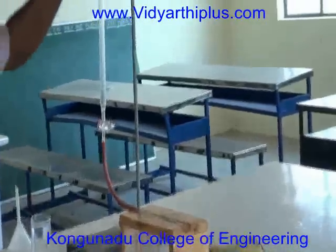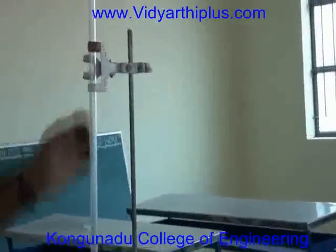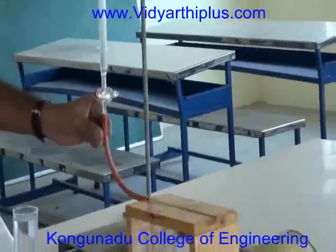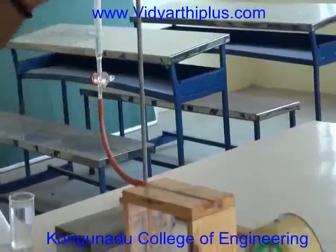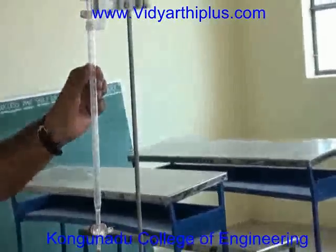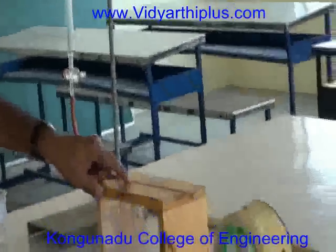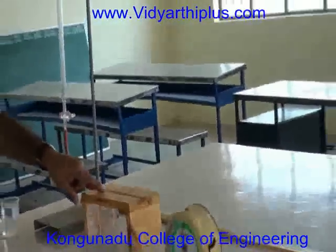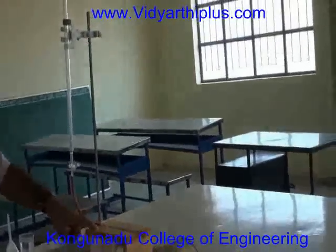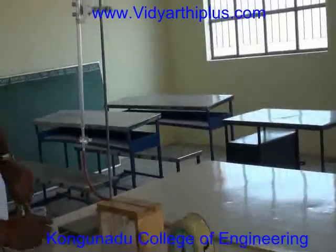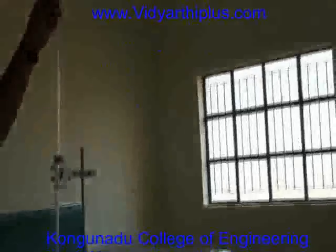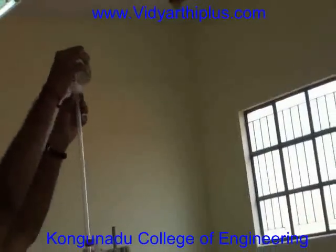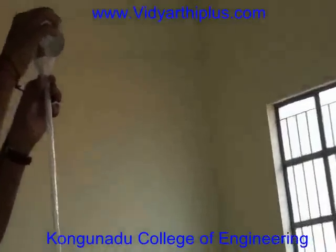The burette is fixed in the burette stand. A rubber tube is used to connect both the burette and the capillary tube. The capillary tube is kept horizontal by using a table. The burette is then filled with water above the zero level.